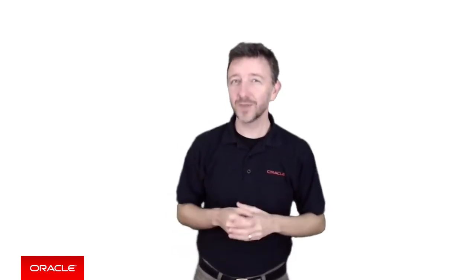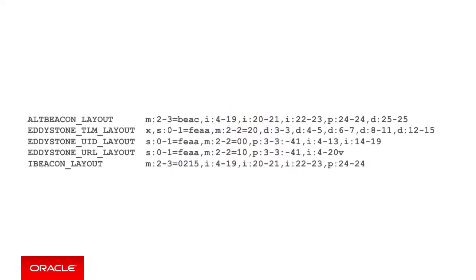Luckily, however, I then discovered the beacon layouts for different beacon types are readily available on the internet, and here are some examples I've included on the screen. In looking through these examples, they do seem pretty foreign or alien. So it's worthwhile having an idea of how to read these layouts — let's explore some of them now, looking at alt beacon and iBeacon layouts.